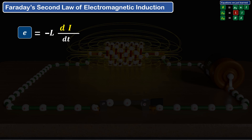This equation shows that if the rate of change of current is higher, then higher will be the magnitude of EMF induced. The negative sign indicates that the EMF induced will always act to oppose the change of current, whether it is increasing or decreasing.